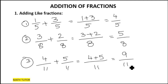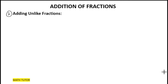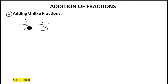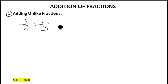Now let's see how to add unlike fractions. What are unlike fractions? If their denominators are different — like here we have the fraction one-half where two is the denominator, and another fraction one-third where three is the denominator. Now I have to add both fractions, but the denominators are different, so the first step is to find the LCM of two and three.